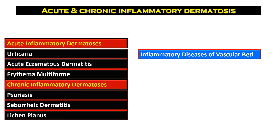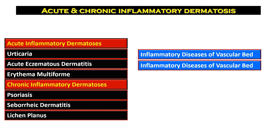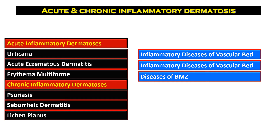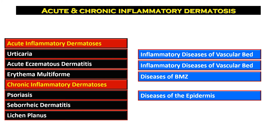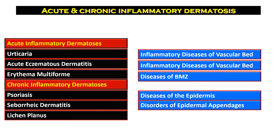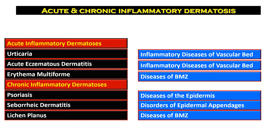Urticaria is an inflammatory disorder of the vascular bed. Acute eczematous dermatitis is also included in the same pathogenetic mechanism, while erythema multiforme is the disease of the basement membrane zone. Psoriasis is a chronic disease of the epidermis. Seborrheic dermatitis is a disorder of the epidermal appendage, and lichen planus is also a chronic inflammatory dermatosis occurring at the basement membrane zone.